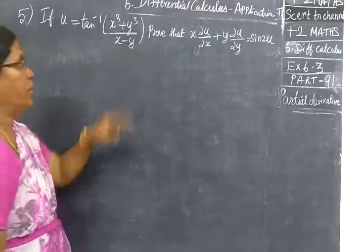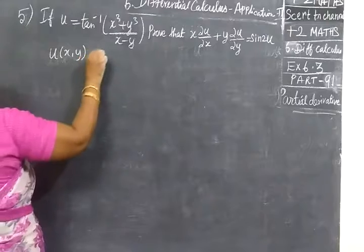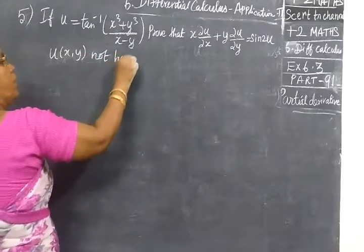All the powers should be the same. So u of x, y is not a homogeneous function.